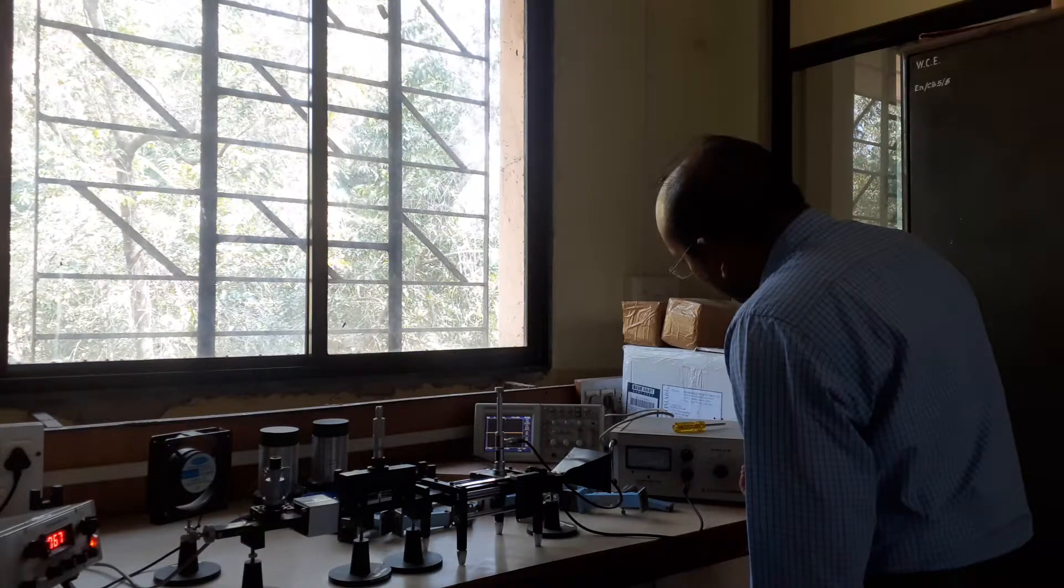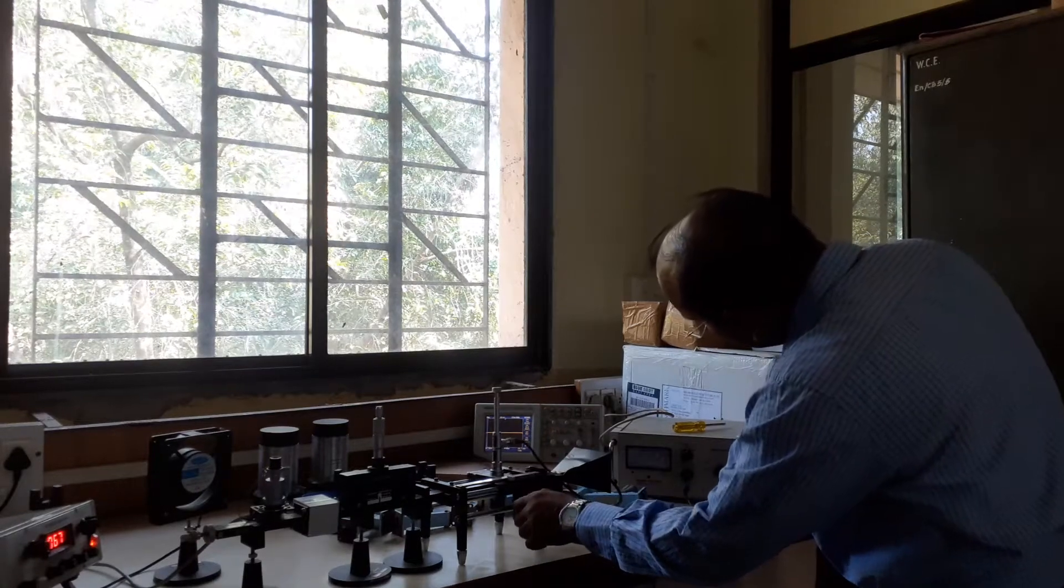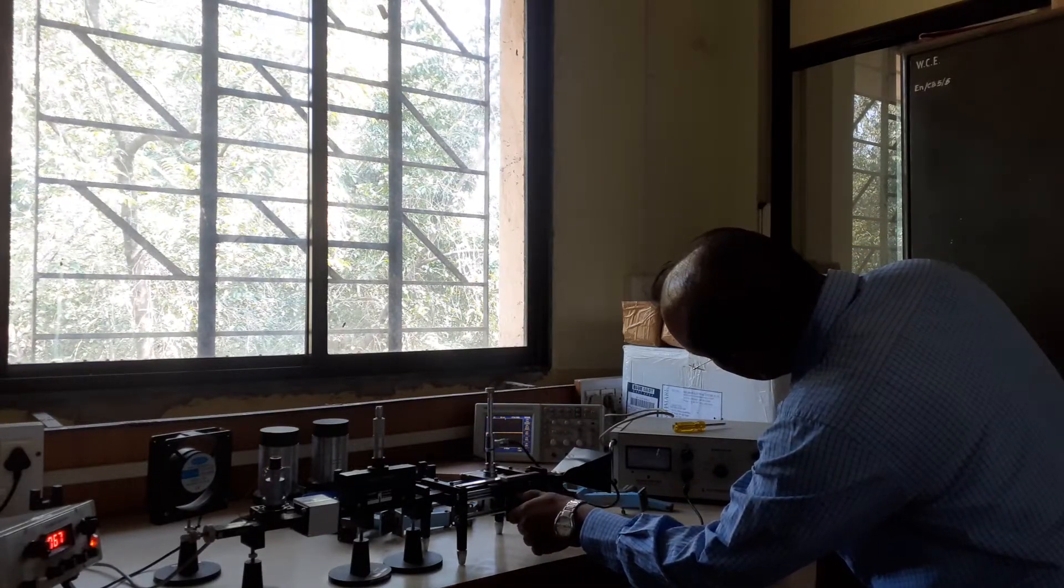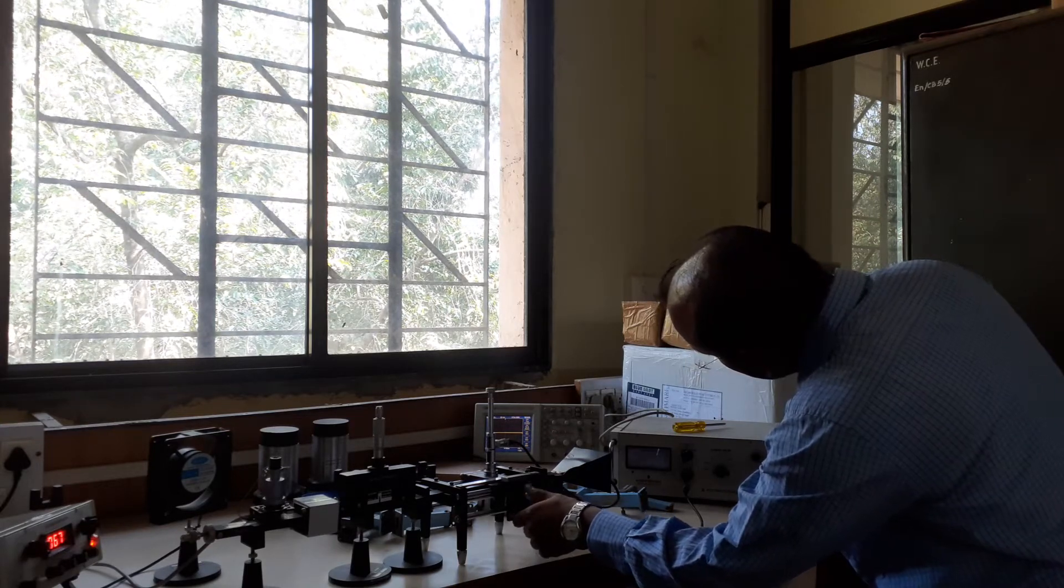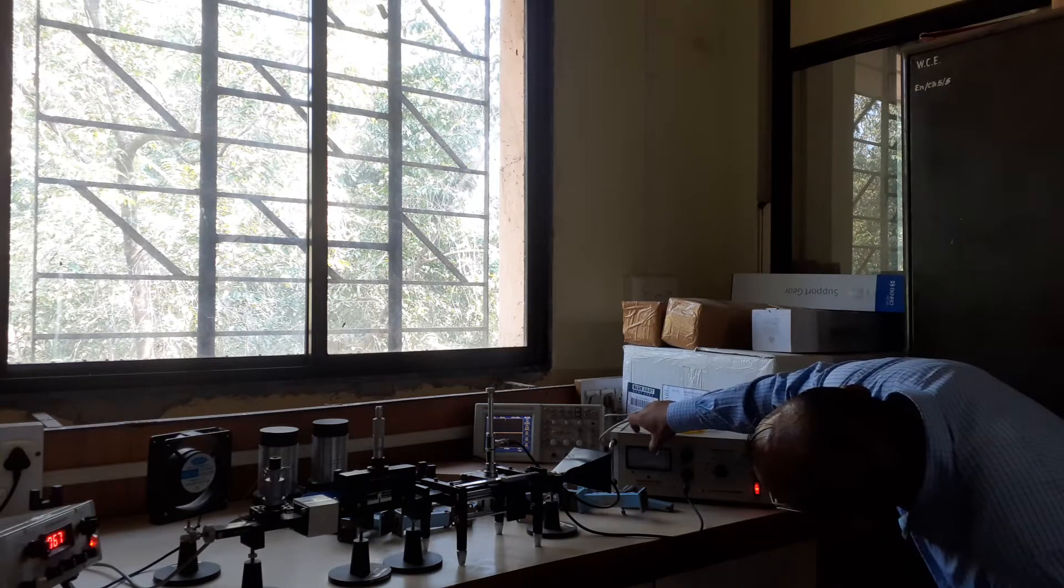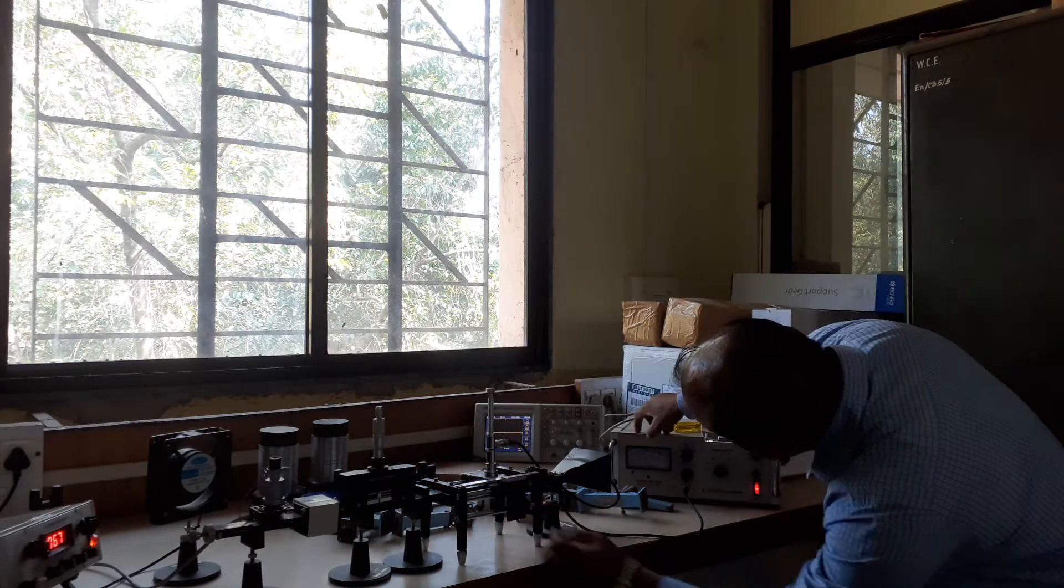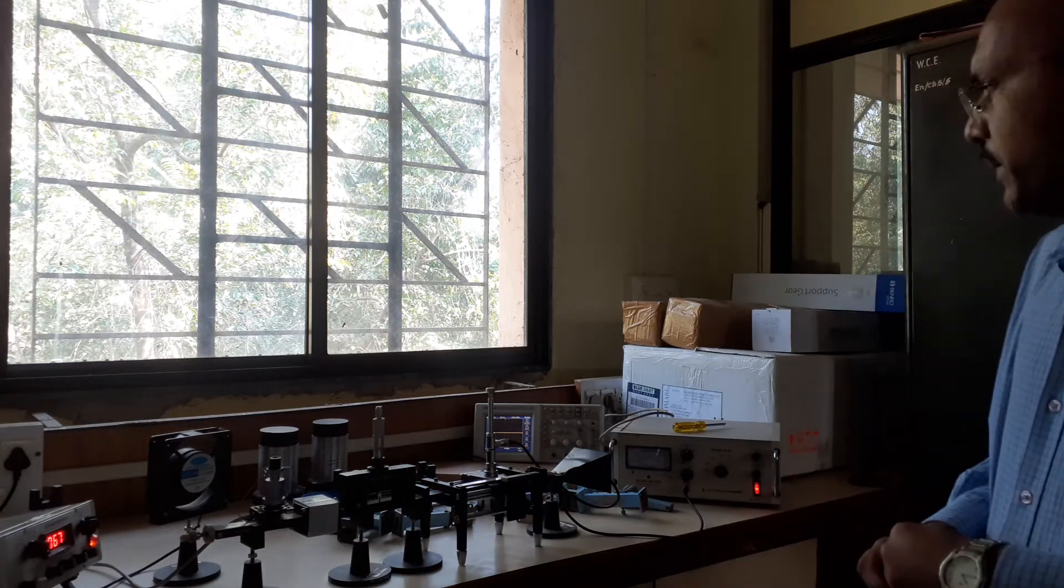So we will adjust the fine knob here. So move now. So here we are getting the difference. Here, that is about 1.2 something. So that is the VSWR value. Low VSWR value. That will be 1.2.